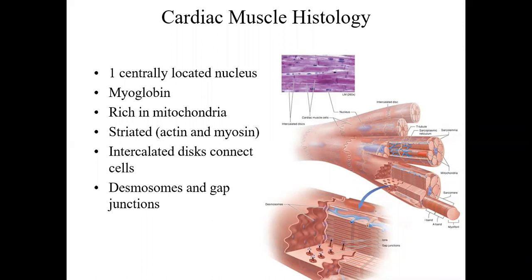Cardiac muscle cells are striated, referring to the pattern of actin and myosin myofilaments inside the muscle tissue. You can see the striations when you look at the histology. They also have intercalated discs that help connect these cells, allowing for very quick, fast cell-to-cell communication. Electrical signals pass very quickly between cells because of the intercalated discs — visible as zigzag areas connecting cells on the diagram.